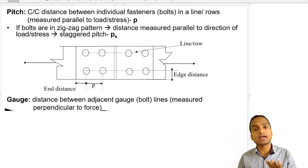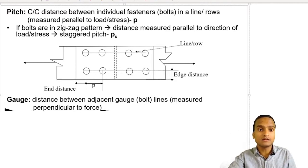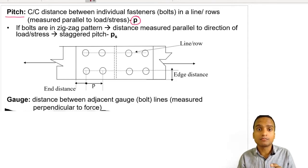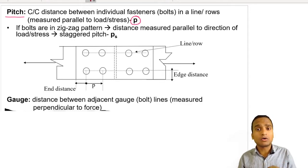A joint has four parameters. The first parameter is pitch, represented by the letter P. Pitch is the center-to-center distance between two consecutive individual fasteners in a line or row, measured parallel to the load and stress direction.